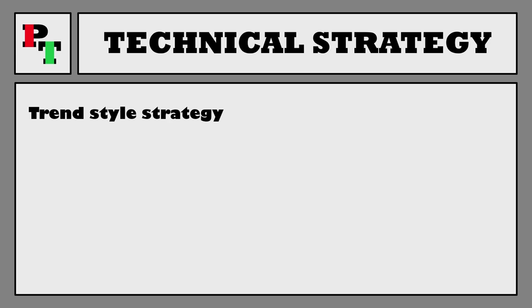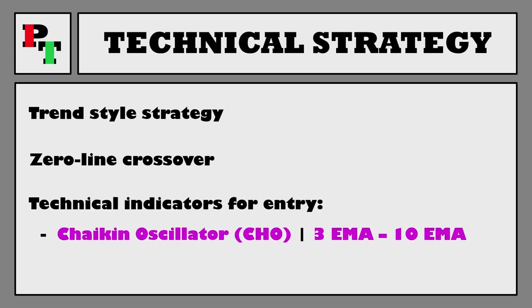We're testing a technical trend style strategy today. It's a good old fashioned zero line crossover — very easy, very original stuff. We'll need our technical indicators for this, so we'll start with the cornerstone of the strategy: the Chaikin oscillator.